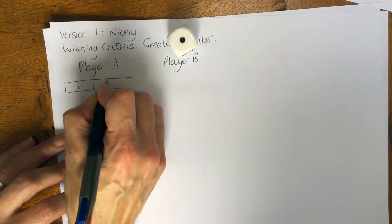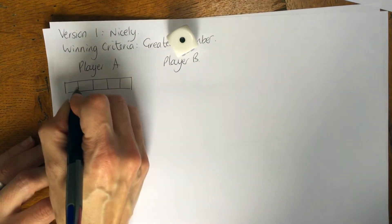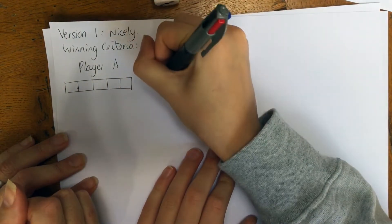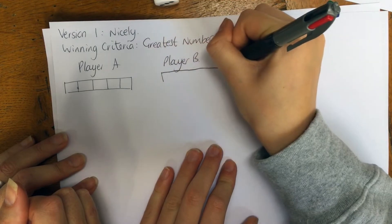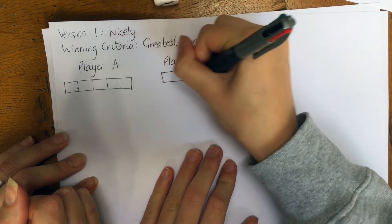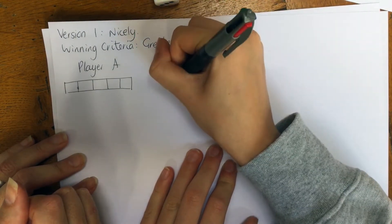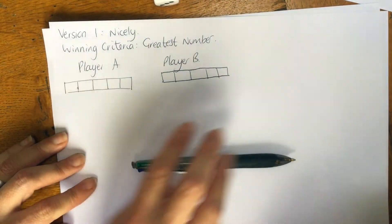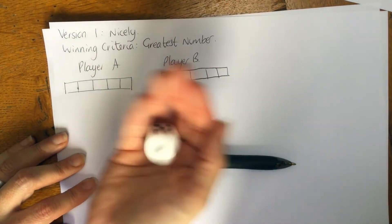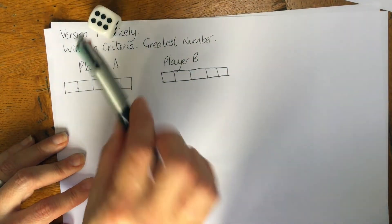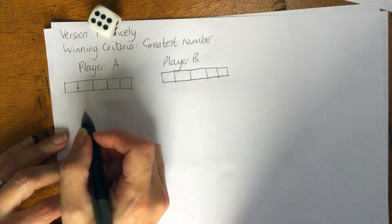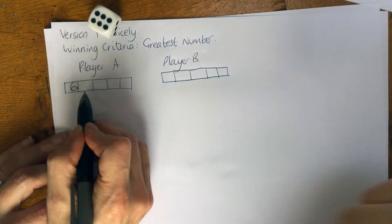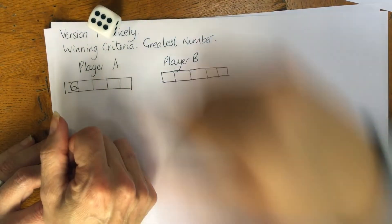I'm going to play with five digits, so we're talking about tens of thousands. Player B is going to draw that box as well — five gaps. Okay, I'm going to go first. I've got a six and we're going for greatest number, so I'm going to put my six in the ten-thousands place, which means I'm going to get at least 60,000.